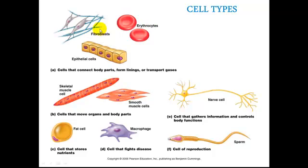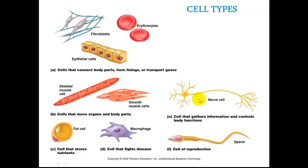We'll see here fibroblasts and epithelial cells — these are all types of connective tissue that we will look at in Chapter 4. In Chapter 9 we'll talk about skeletal muscle and smooth muscle, and you can see examples of those kinds of cells. In Chapters 11, 12, and 13 we'll talk about nerve cells. Some other cells we will see would be things like fat cells, macrophages, which are involved in the immune system, and sperm.